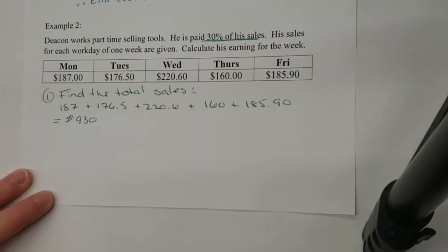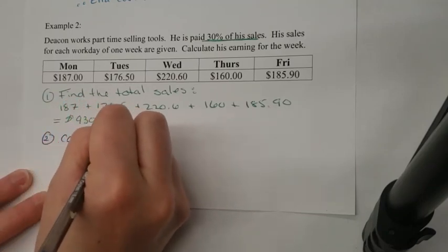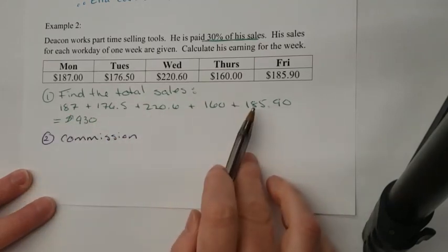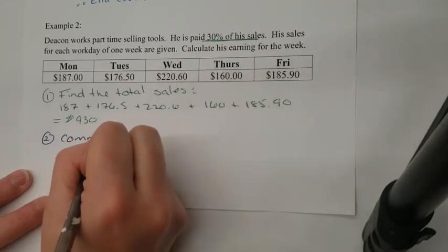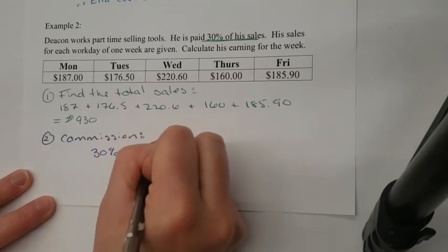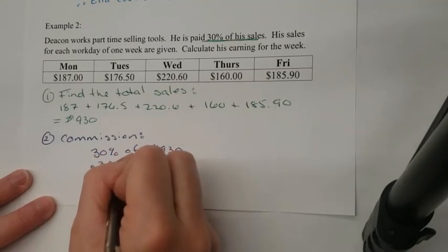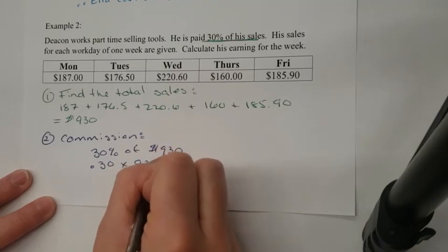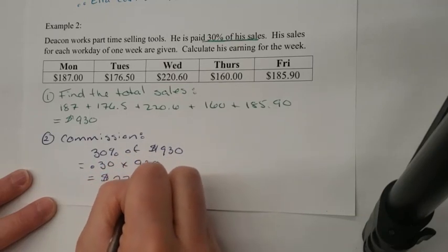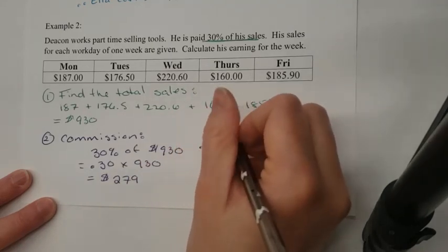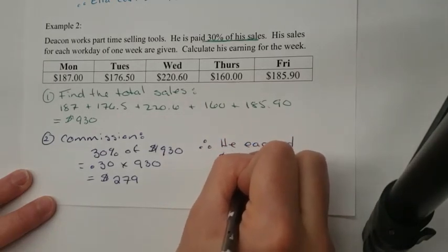The next thing we're going to do is calculate his commission. Now that we know the total sales, we can figure out his total commission. He gets paid 30% of his sales, so it's 30% of $930. We change that into a decimal: 0.30 times 930, and we get $279. So therefore, he earned $279 for the week.